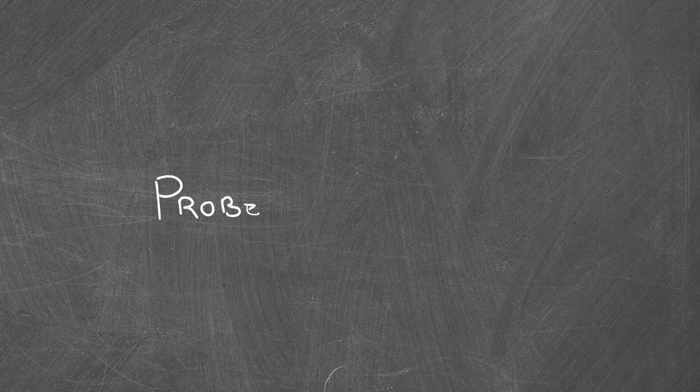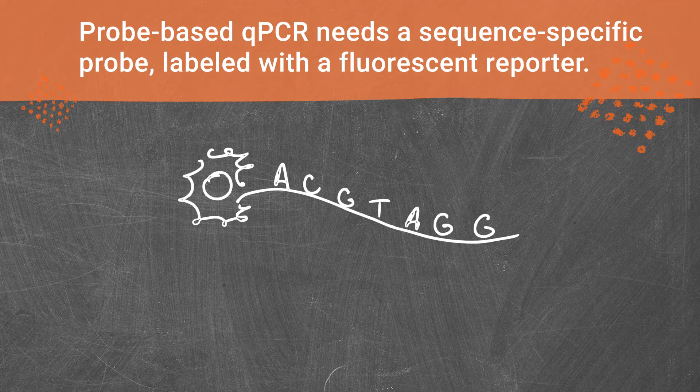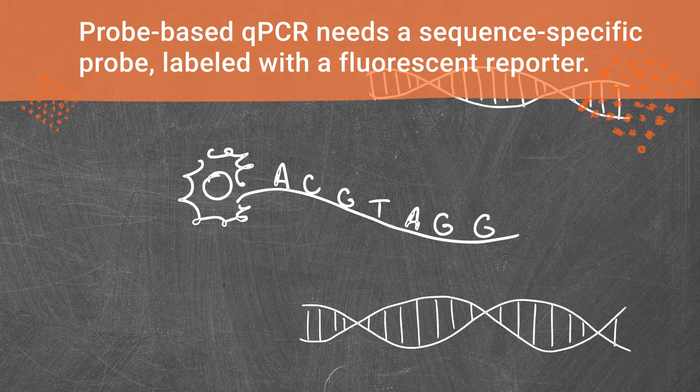The first thing you need to do is decide if you're going to use probe or dye-based qPCR. Probe-based qPCR requires a sequence-specific probe that is labeled with a fluorescent reporter. This is great for multiplexing if you want to detect multiple sequences in the same reaction.